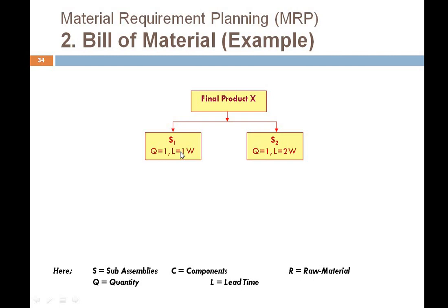For S1, we require one week to receive the order and one week for conversion or production. For S2, the quantity required and the conversion time is also noted — S2 requires two weeks lead time. So for both S1 and S2, lead times are given. However, S1 production is not complete on its own — S1 is itself dependent upon two components: C1 and C2.